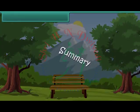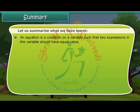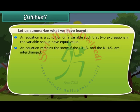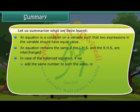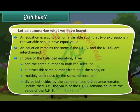Summary. Let us summarize what we have learnt. An equation is a condition on a variable such that two expressions in the variable should have equal value. An equation remains the same if the LHS and the RHS are interchanged. In case of the balanced equation, if we add the same number to both the sides, or subtract the same number from both the sides, or multiply both sides by the same number, or divide both sides by the same number, the balance remains undisturbed. That is, the value of the LHS remains equal to the value of the RHS.